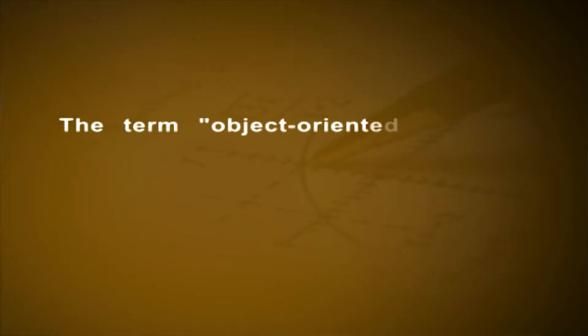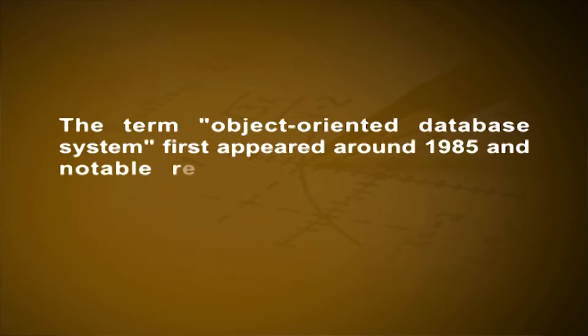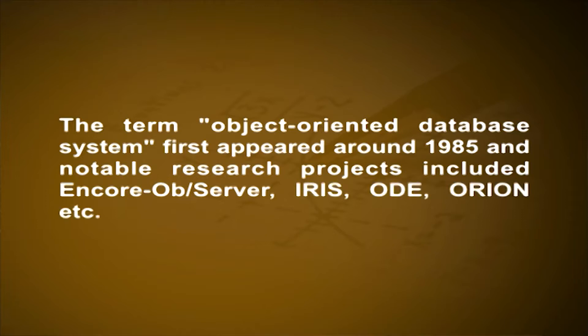The term object-oriented database system first appeared around 1985, and notable research projects included Encore OB Server, IRIS, ODE, Orion, etc. For example, an object-oriented implementation of the employee database consists of three classes or types of objects: employee, job, and job assignment.